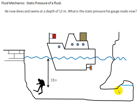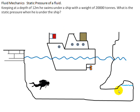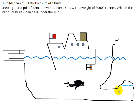Keeping the same depth of 12 meters, he swims below the ship which weighs 20,000 tons. What is the pressure he feels? The same as before, because he is still at 12 meters. The ship is weightless in the sea and makes no effect on the pressure.